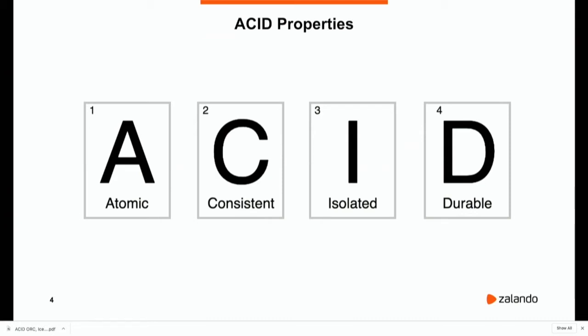For example, consistency may mean that if a column should have only unique values, this is preserved regardless of the operations done on the data source. Another meaning of consistency can be that if a certain set of committed transactions has been performed on top of a data source, two completely independent readers are going to see the same data when they try to read from this data source. Isolation is mostly about two transactions not seeing partial results — it is kind of guaranteed by atomicity to some extent. From the perspective of the reader, it means that if we have two concurrent transactions modifying the data source, the effect will be as if they were performed one after the other.